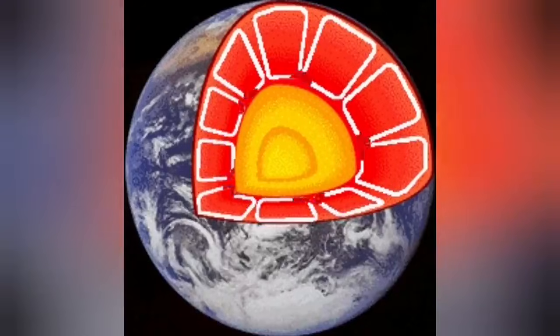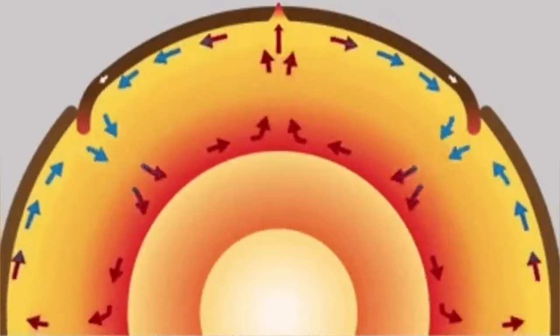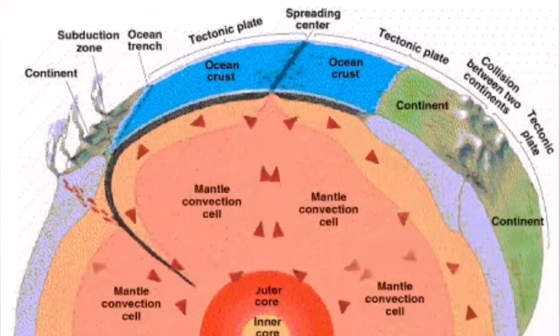This heat creates convection cells through the mantle of the Earth, which rises to the surface and cracks the hardened solidified crust of the Earth, we call it lithosphere.